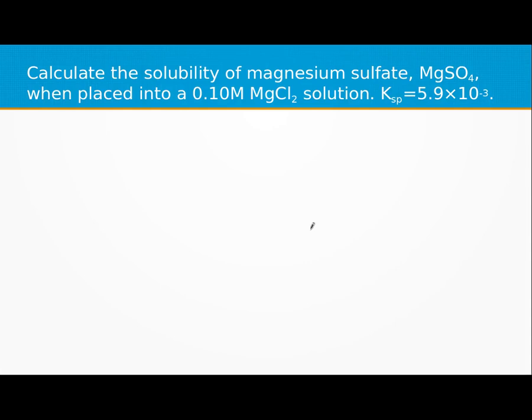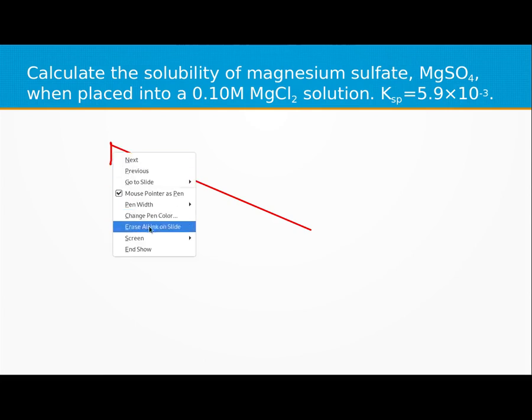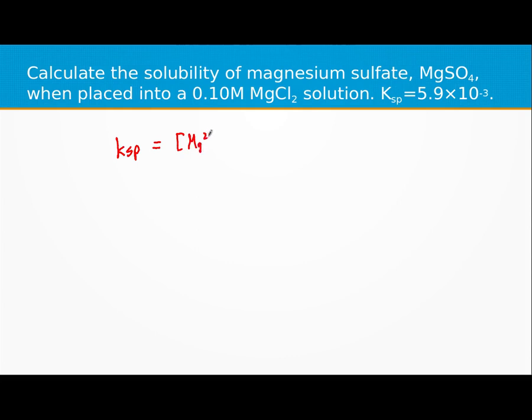We want to calculate the solubility of magnesium sulfate when placed in a sample of 0.1 molar magnesium chloride. Our normal Ksp for this is going to have for every magnesium sulfate, one magnesium and one sulfate.